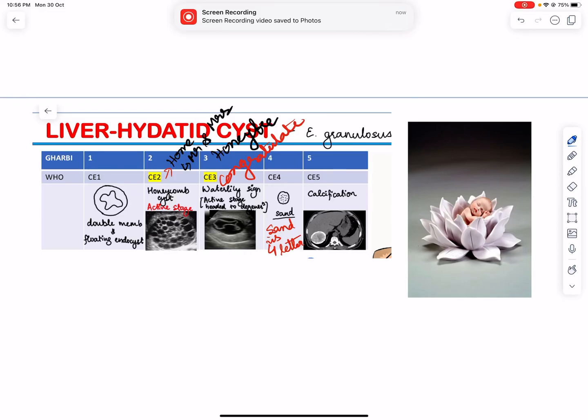Now we are going to see the liver hydatid cyst Gharbi classification and their staging and what is seen in those stages. For example, in stage one there is double membrane or floating in the cyst. Just visualize that someone is traveling in a river freely and is single, so double membrane with floating in the cyst.